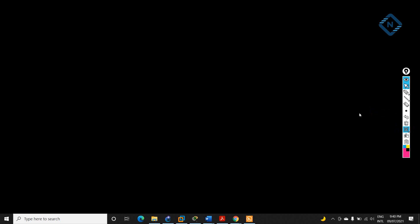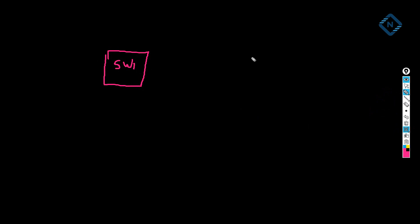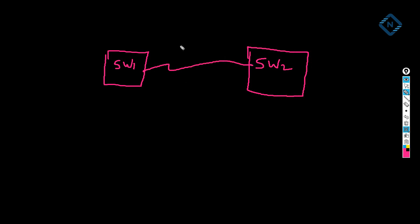Imagine you have two switches. Let me draw a diagram. I have Switch 1 here and Switch 2 here. I am taking a small scenario — you can imagine you have 20 switches instead. I connected them and maybe this is a gigabit speed, 1 GB speed in between the switches.